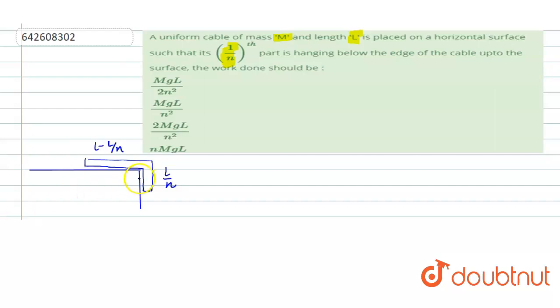Okay, so we have to find the work done. This is the initial situation. We have to find the work done that one has to do in order to keep this hanging part back to the table. So if this is the initial situation, finally we can say this whole chain will be lying on the table itself. This is the final situation.